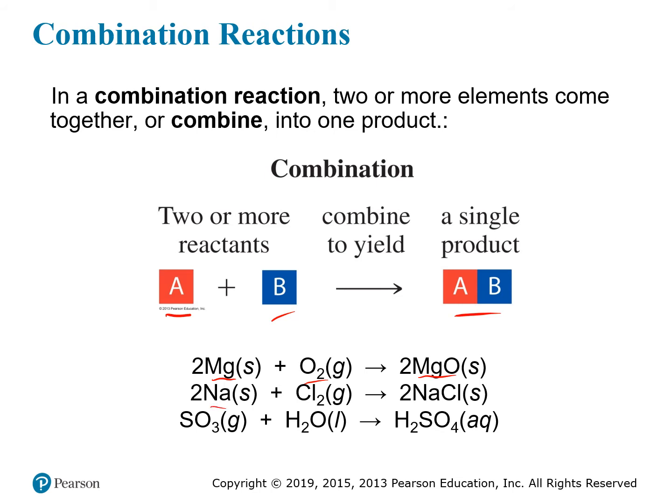You can take sodium metal and combine it with chlorine gas, and they form sodium chloride — table salt. You can also have two compounds come together to form more complex compounds, such as sulfur trioxide combined with water to form sulfuric acid, H2SO4. In all these cases, two reactants yield a single product — they're combination reactions.